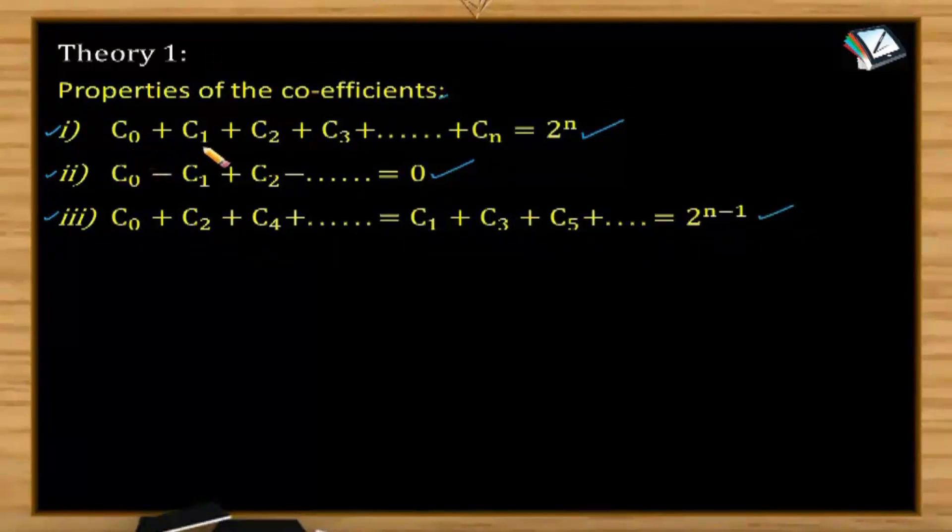What do you mean by C0, C1? Actually, nC0, nC1, nC2 can be notated as C0, C1, C2 and so on. Let us go to the derivation part of these properties in this way.